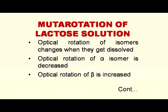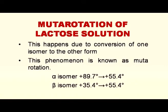Mutarotation of lactose solution: if you take either alpha or beta isomer of lactose and dissolve it in water, it gets converted into the other isomer. If alpha is dissolved, it will get converted into beta until an equilibrium is reached. On the other hand, if beta is dissolved, it will convert into alpha until equilibrium is reached, where the optical rotation is 55.4 degrees. This phenomenon happens due to conversion of one isomer to the other form and is known as mutarotation. Alpha has an optical rotation of plus 89.7 degrees and beta has 35.4 degrees.